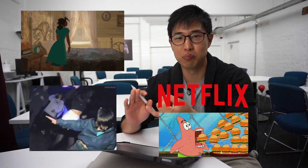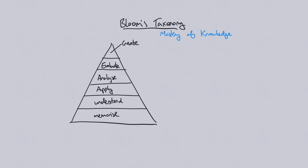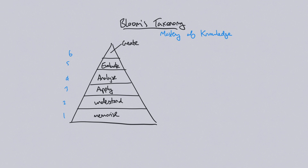This is Bloom's Taxonomy — strictly speaking, the revised Bloom's Taxonomy. It's composed of six different levels: level one at the bottom, up to level six at the very top. Starting from the bottom two levels, these are the people with the lowest level of knowledge mastery. Level one is memorize and level two is understand. These are considered lower levels of learning. Learning to memorize something means that information is not truly well known.